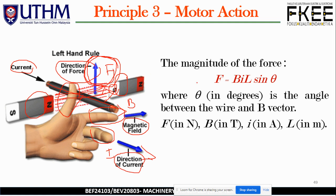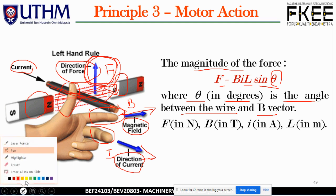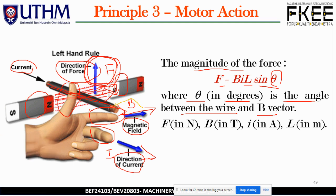In mathematical form, the magnitude of force F equals B·I·L·sinθ, where θ in degrees is the angle between the wire and the B vector. Since they are perpendicular, θ is 90 degrees. The units are: F in Newtons, B in Tesla, I in Amperes, and L in meters.